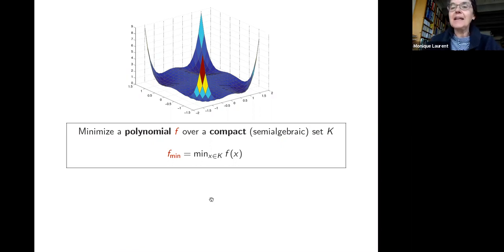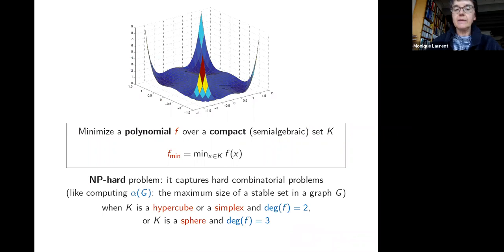The setting is: we have a polynomial which we want to minimize over a basic closed semi-algebraic set K. This is a hard problem — non-convex, non-linear in general — and it captures hard combinatorial problems such as computing the stability number of a graph.